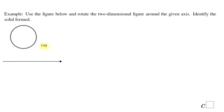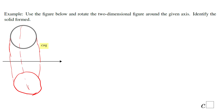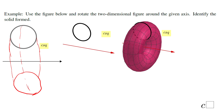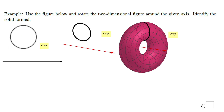We have another shape when we take a circle and rotate it around this line. I'll try to reflect that circle. This is what you get when you rotate a circle around an axis with a distance between the circle and the axis — you get this shape, a donut or torus.